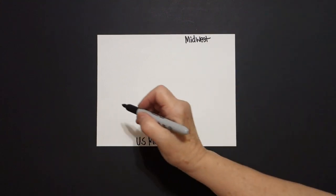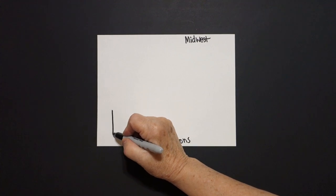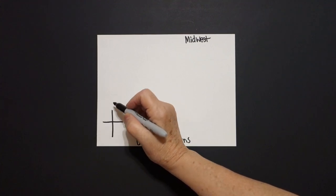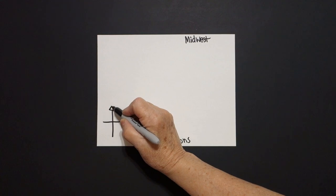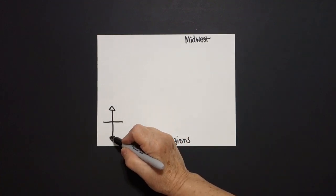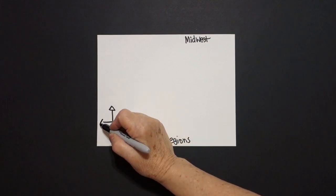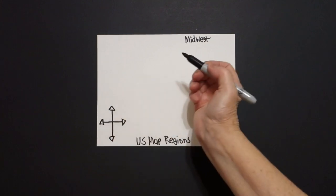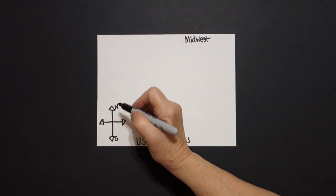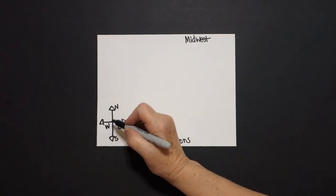And very important, let's just draw that compass rose so you know where you are, where you're going. Two straight lines, baby triangle, triangle, triangle — north, south, east, and west.